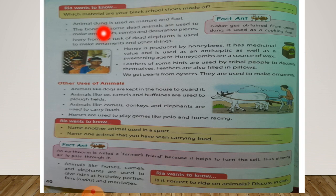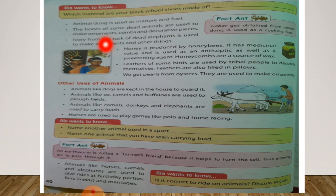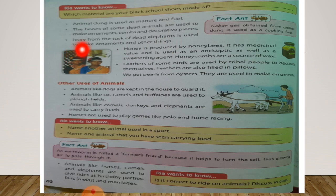The next point: the bones of some dead animals are used to make ornaments. What do you mean by ornaments? Ornaments means jewelry, combs, and decorative pieces.